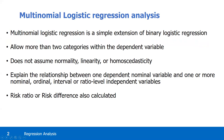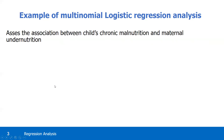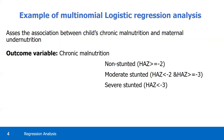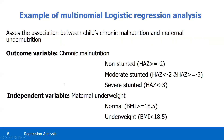Multinomial logistic regression is a simple extension of binary logistic regression that allows more than two categories within a dependent variable, and does not assume normality or homoscedasticity. For example, if our objective is to assess the association between child chronic malnutrition and maternal undernutrition, where the outcome variable — child chronic malnutrition — has three categories: non-stunted, moderate stunting, and severe stunting, whereas the independent variable is maternal underweight, defined as normal and underweight.